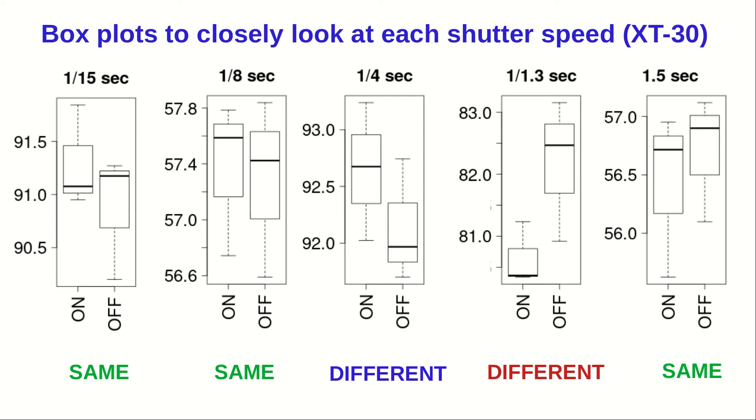For shutter speed 1.3, switching off the IS was a good idea. Shutter speed 4 gave us a too close to call situation. However, if anything, then leaving the IS on seemed to help just the tiniest bit. Apparently, at this region of shutter speed, the system is sensitive to IS, and it can go either way, more typically in the favor of no IS.